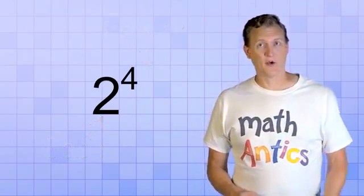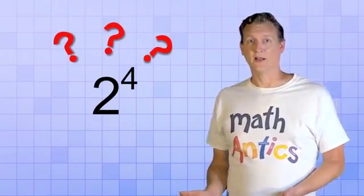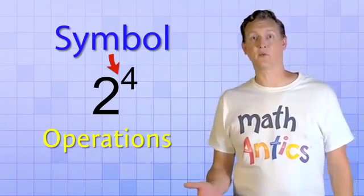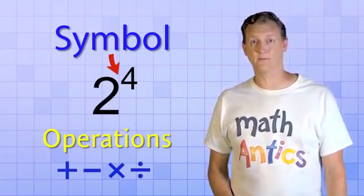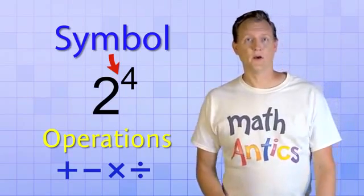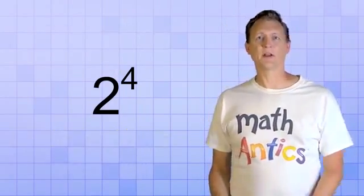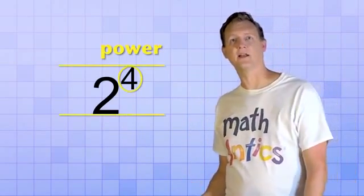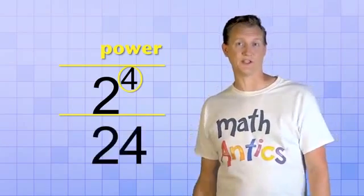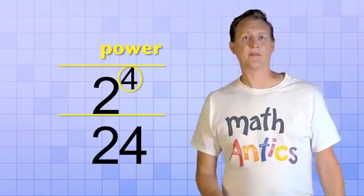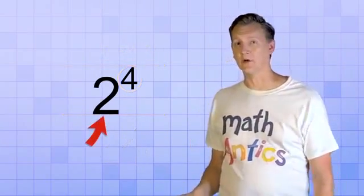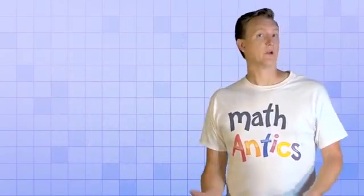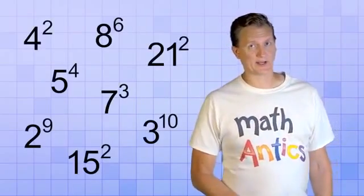But I know what some of you are thinking — where is the operator symbol? If exponents are math operations, don't we need a symbol that goes between them, like there is with multiplication and the other arithmetic operations? Well, yes and no. Most of the time we don't need a special operation symbol, because of the way the numbers are written. Since the power is written smaller and up at the top of the line, it looks much different from a normal digit, so we don't need to use a symbol. In math, whenever you see a regular size number with a smaller number up to the right, you know it's an exponent. And once you get used to seeing exponents like this, it's easy to recognize them.